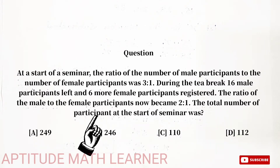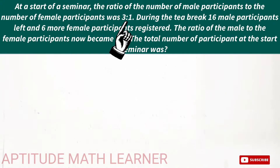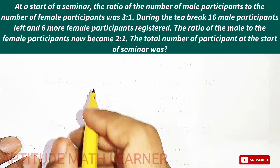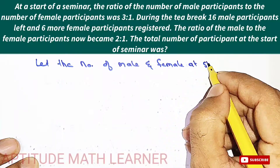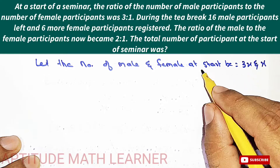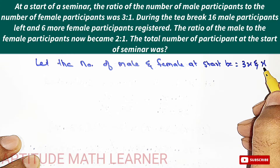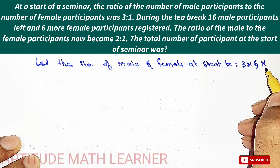The total number of participants at the start of the seminar was — so here we have to find out the number of male and female at the start. For this, let the number of male participants at start be 3x and the number of female participants be x, representing the 3 to 1 ratio.